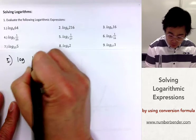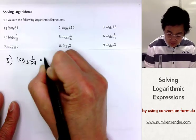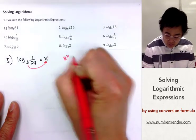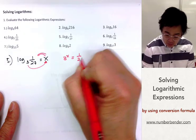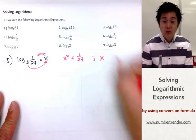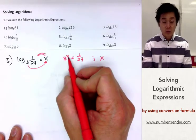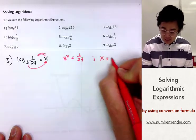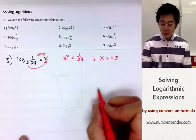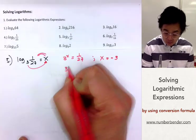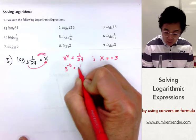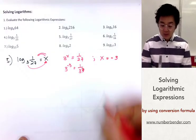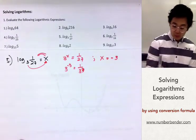For problem 5: logarithm of 1 over 27, base 3. Equating to x and converting gives us 3 raised to x equal to 1 over 27. We know that 3 times 3 times 3 is 27, and since we need the reciprocal, we need the negative value of that exponent. So x equals negative 3, because 3 raised to negative 3 turns into 1 over 3 cubed, which is 1 over 27.